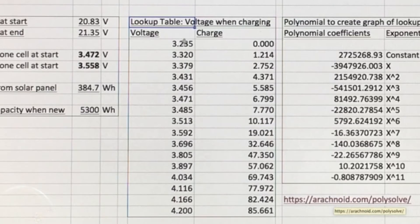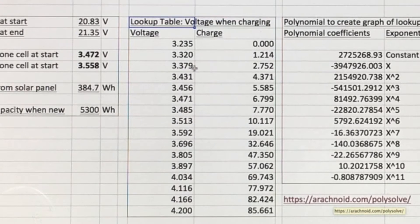So we have a lot of the voltages here and the implied state of charge in the battery. So you see at 3.379 volts it'll only be 2.752% charged.